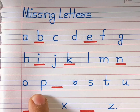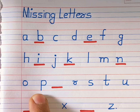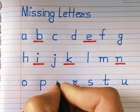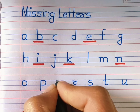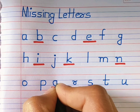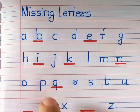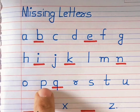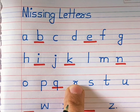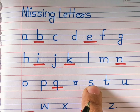Which alphabet is this? P. What comes after P and before R? Yes, small Q. P, Q, R, S.